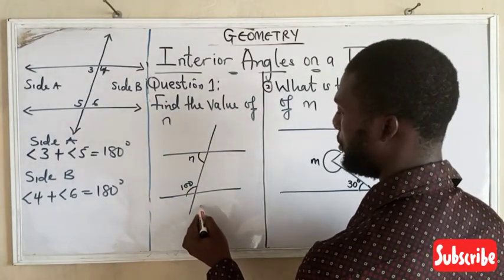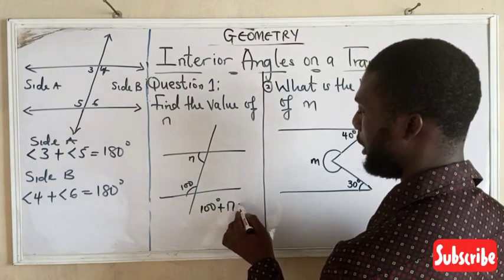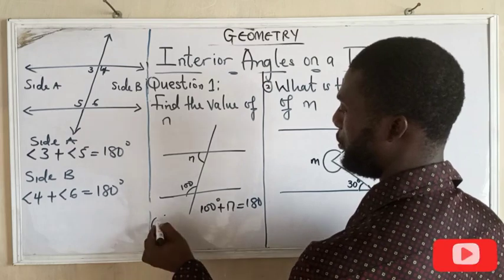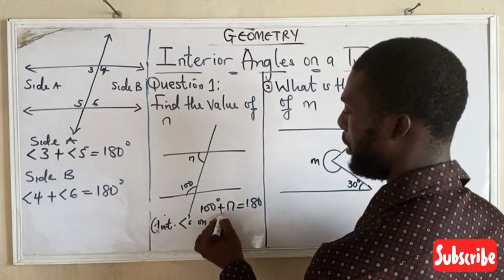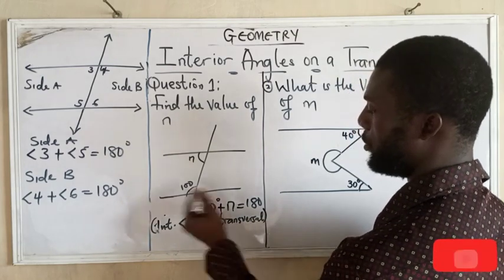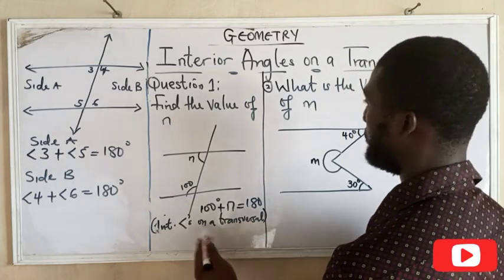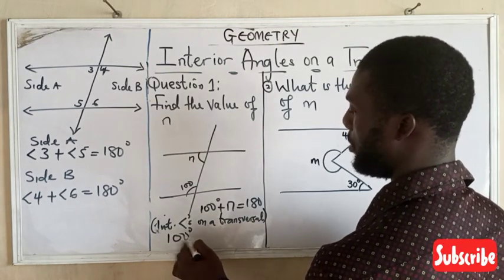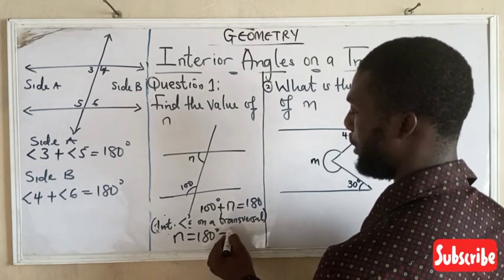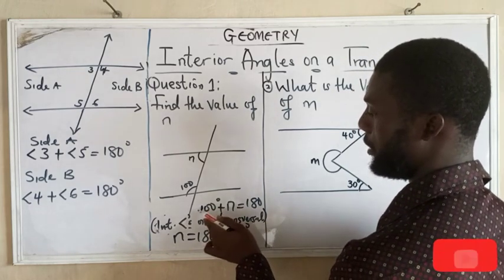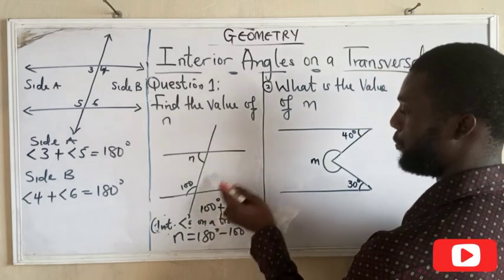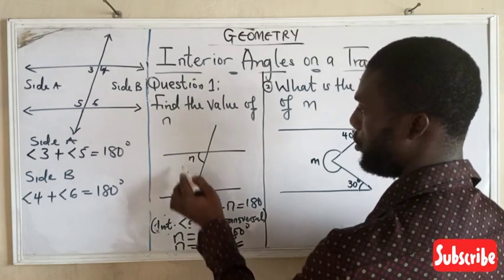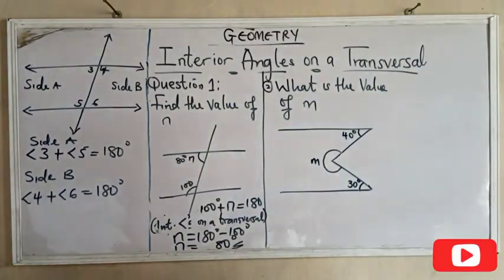So I can say that 100 degrees plus n equals 180 degrees, using interior angles on a transversal. To get the value of n, I will subtract both sides by 100. So n equals 180 minus 100 degrees. Let's not forget that this 100 is carrying a positive 100 degrees, so once it passes through the equality sign it changes to negative. So n equals 80 degrees, and that ends the question there.